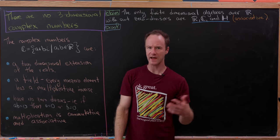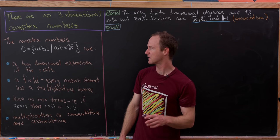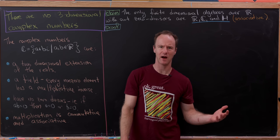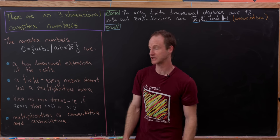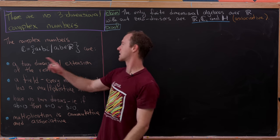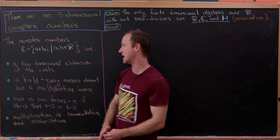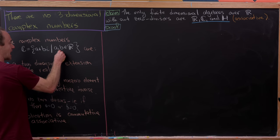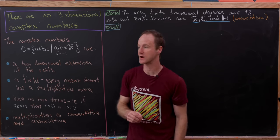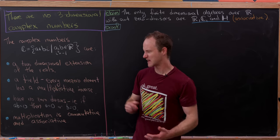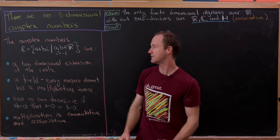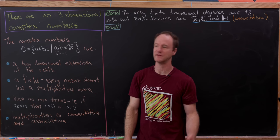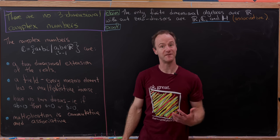Before we look at that question more carefully, let's see some properties that the complex numbers have, so that we have properties in mind that our new object should have. The complex numbers is the set of everything of the form a + bi where a and b are real numbers, and importantly i is the square root of minus 1, so i squares to minus 1. The complex numbers is a two-dimensional extension of the reals and it's also a field.